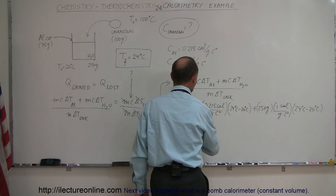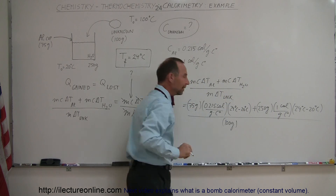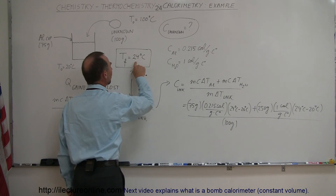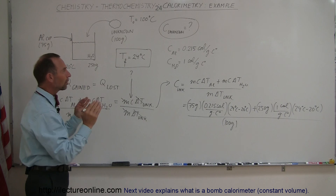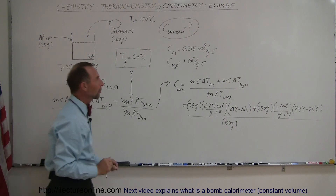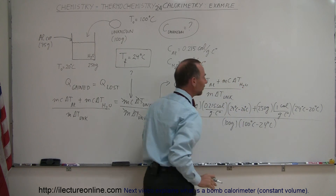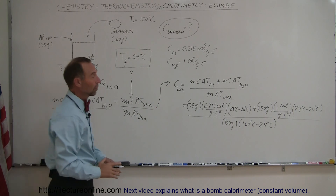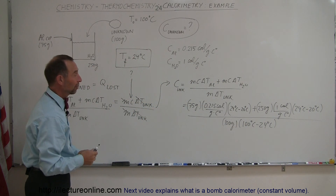Then we divide the whole thing by the mass of the unknown, which is 100 grams, and the ΔT of the unknown. Here we have to be careful: it started at 100 degrees and ended at 24 degrees, so there was a temperature drop of 76 degrees. But instead of writing negative 76, we want the difference to be positive — remember, for this equation to work, all quantities on both sides must be positive. So we write 100 degrees centigrade minus 24 degrees centigrade for a difference of 76 degrees centigrade. If we made this negative, we'd get a negative C, and there's no such thing as a negative specific heat.